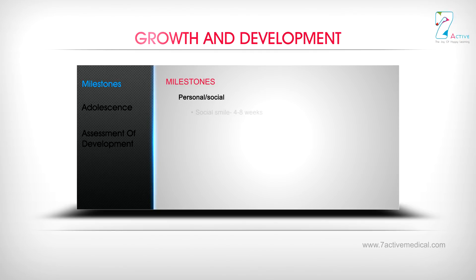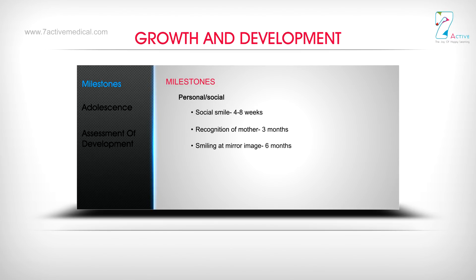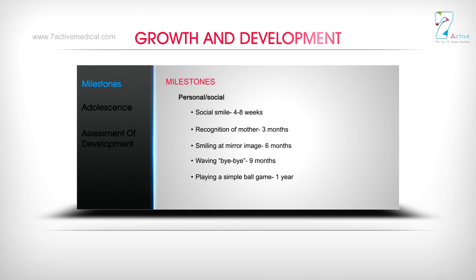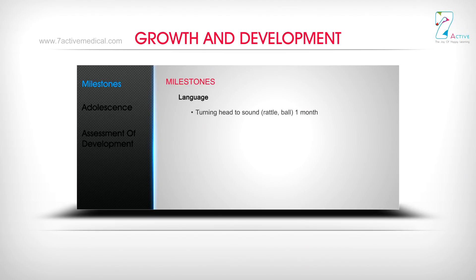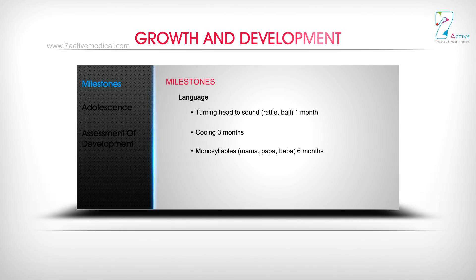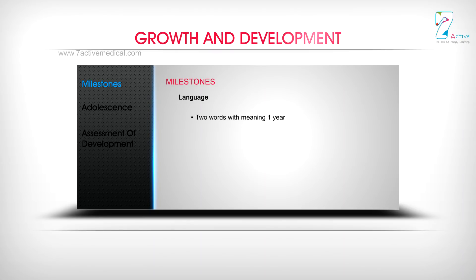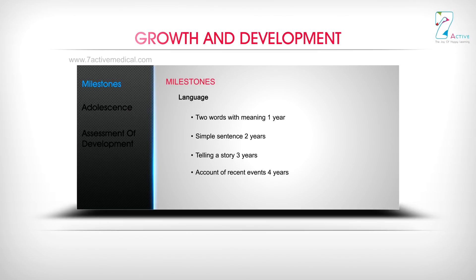Personal or Social Milestones: Social smile — 4 to 8 weeks; Recognition of mother — 3 months; Smiling at mirror image — 6 months; Waving bye-bye — 9 months; Playing a simple ball game — 1 year; Knowing gender — 3 years. Language Milestones: Turning head to sound — 1 month; Cooing — 3 months; Monosyllables (ma, pa, ba) — 6 months; Bi-syllables (mama, papa, baba) — 9 months; Two words with meaning — 1 year; Simple sentence — 2 years; Telling a story — 3 years; Account of recent events — 4 years.